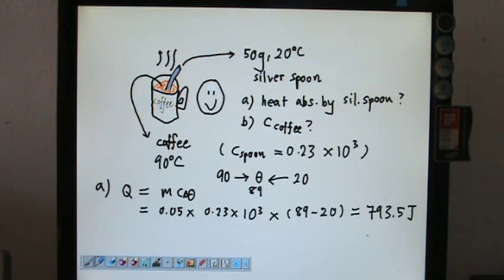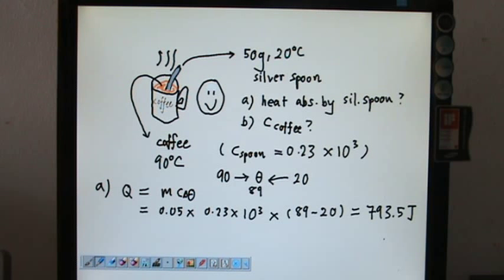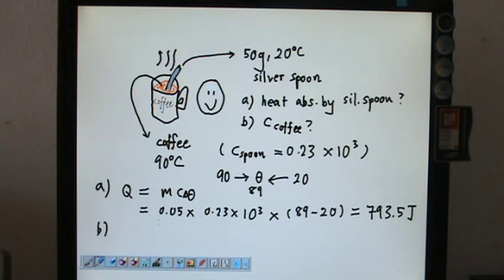You must press the calculator again to verify whether this value is correct or not, because sometimes reference books have some minor typing mistakes. Now for Part B, they are basically asking: what is the specific heat capacity of the coffee?